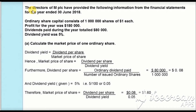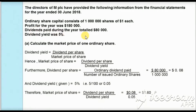The question states that the Director of MPLCF provided the following information from the financial statement for the year ended 30th June 2018. The ownership capital consists of 1 million shares of $1 each. Profit for the year was $180,000, dividend paid during the year totaled $80,000, and dividend yield was 5%.